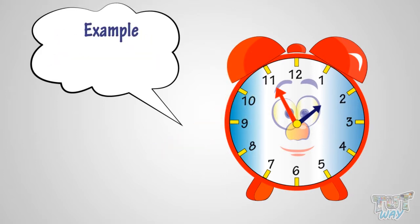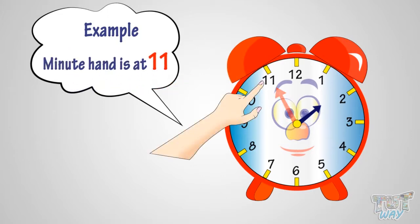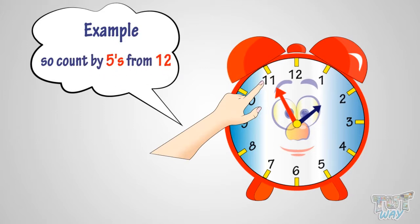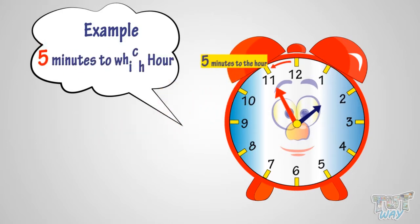See the figure here. The minute hand is at eleven, so count by fives from twelve to get the minutes. It is five minutes to the hour. But five minutes to which hour? Let's try to figure it out.